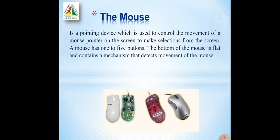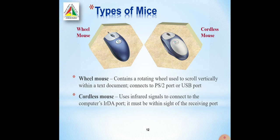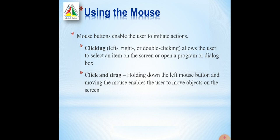A mouse has one to five buttons. The bottom of the mouse is flat and contains a mechanism that detects movement. Typically, two kinds of mouse are used: a wheel mouse and a cordless mouse. A wheel mouse contains a rotating wheel used to scroll vertically within a text document, and it connects to the computer using a USB port or PS2 port. A cordless mouse uses infrared signals to connect to the computer's port. Mouse buttons enable the user to initiate actions like click, click and drag, left click, right click, and double click.